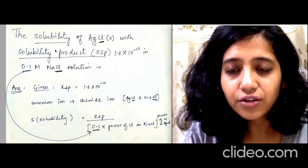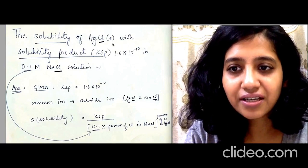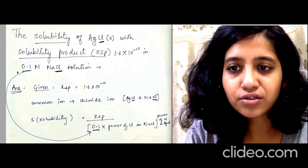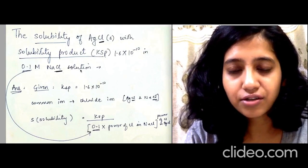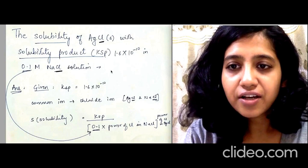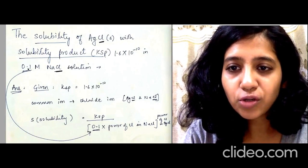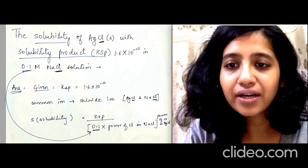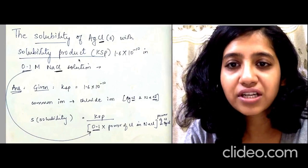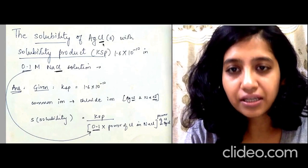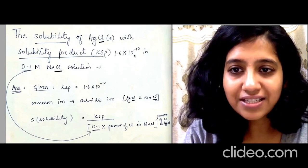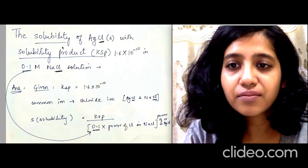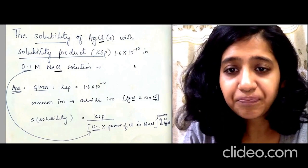So here the question is: solubility of AgCl with solubility product Ksp = 1.6×10⁻¹⁰ in 0.1 M NaCl solution. They have added another solution of 0.1 molar NaCl, so now they are asking for solubility. If they don't add NaCl then the solubility product was this, but if we have added it then what will happen to solubility.